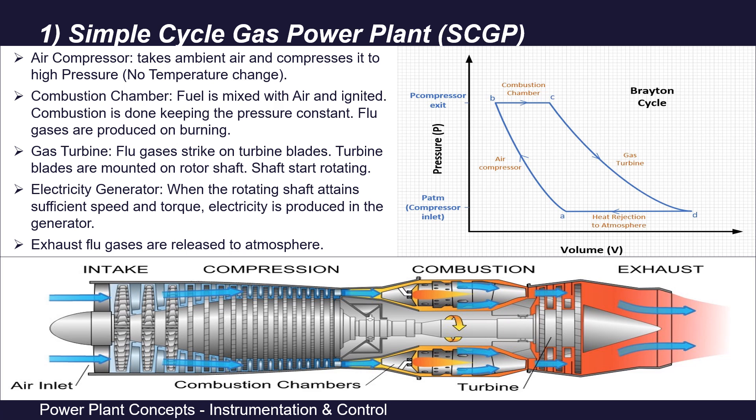Next, these flue gases are passed through the turbine blades, which are mounted on a rotor shaft. As the flue gases strike the turbine blades, the shaft starts rotating. These blades are in multiple stages to utilize the optimum energy of flue gases and to rotate the shaft with sufficient speed and torque to generate electricity in the generator. As the flue gases pass through the blades, the gases expand, thereby increasing the volume while their temperature decreases, as traced from point C to point D on the PV graph.